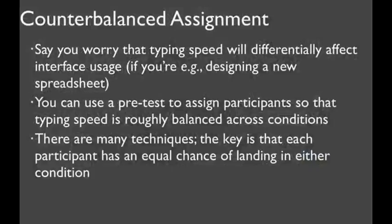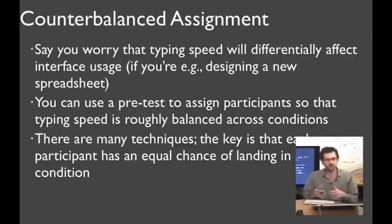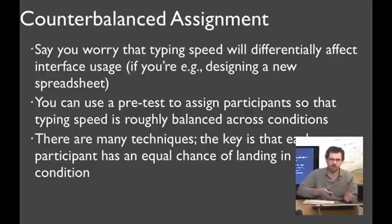We've talked about counterbalancing the order of conditions that participants experience. You can also counterbalance how you assign people to conditions. Say, for example, you're worried that typing speed will differentially affect something in your interface. You're building a new spreadsheet or something like that. You could use a pretest to establish typing speed ahead of time and use that to assign people to conditions. There's many techniques for doing this. The simplest way to do it is just look at high-speed typers versus low-speed typers. The key, no matter what, is that each participant has an equal chance of ending up in either condition.